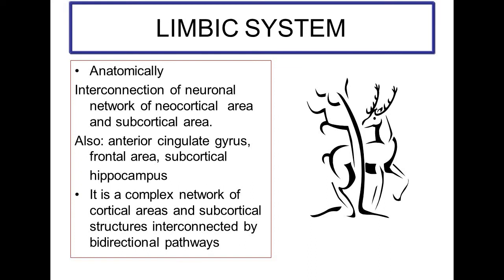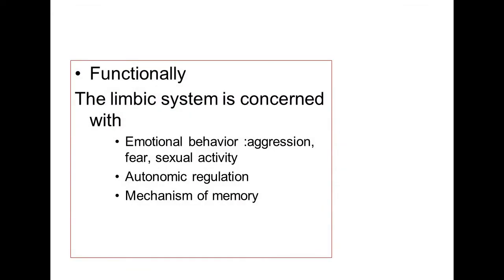The cingulate gyrus, the frontal area, and the subcortical area are also involved in the limbic system. Conclusively, the limbic system is a complex network of cortical and subcortical regions interconnected by axonal pathways bidirectionally to perform the functions of the limbic system.